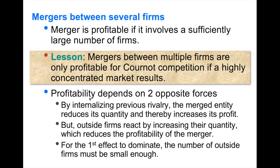The effect of internalizing rivalry is more likely to dominate if there are many firms in the merger, implying that outside firms are few in number. A merger between multiple firms in a Cournot industry can only be profitable if the market becomes highly concentrated as a result of the merger — the merger needs sufficiently many firms in it.